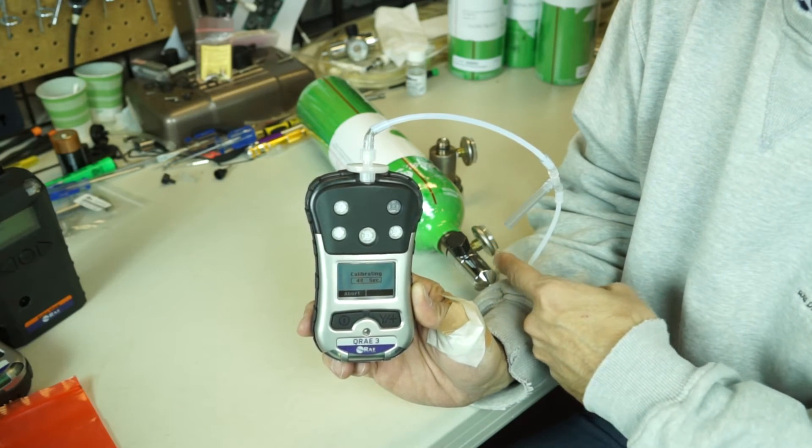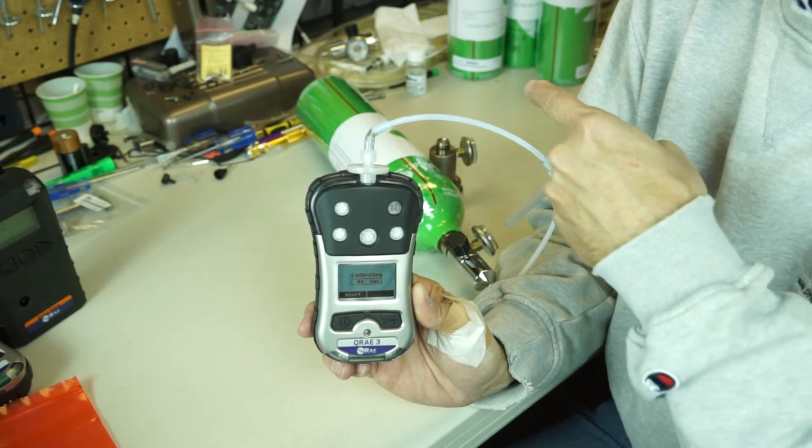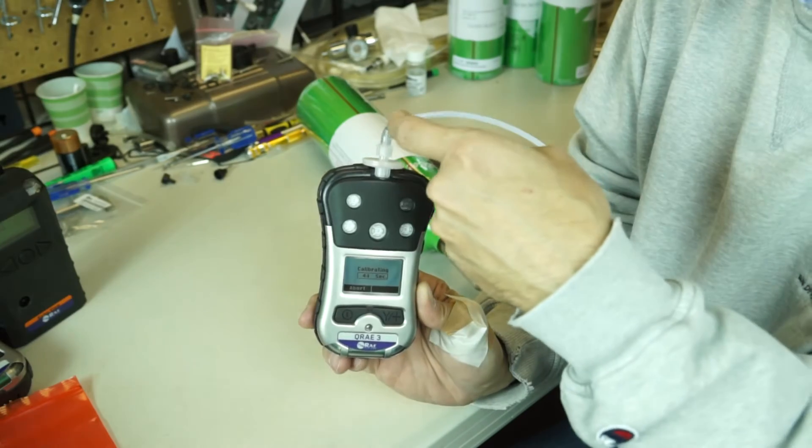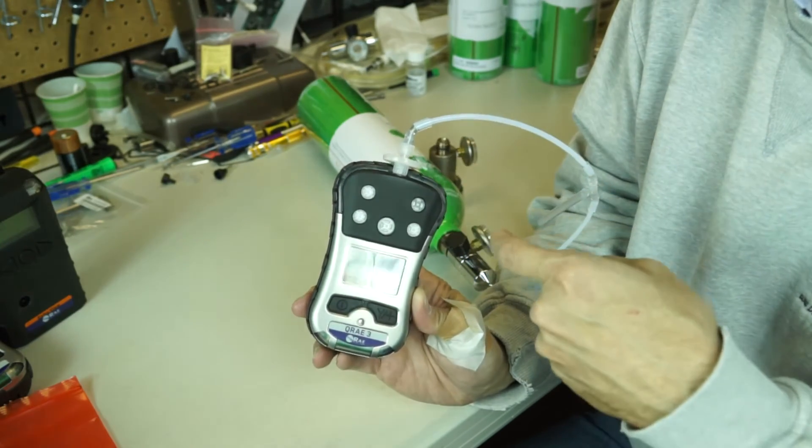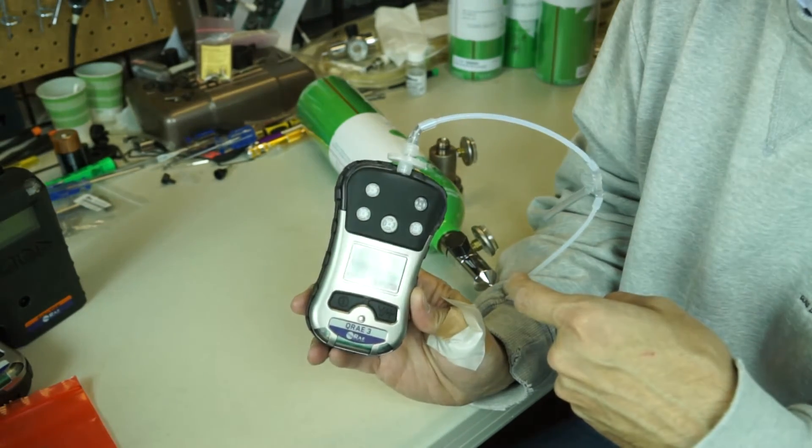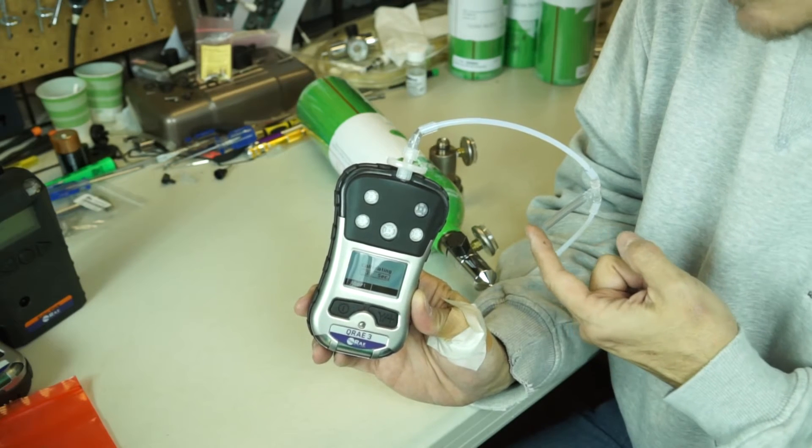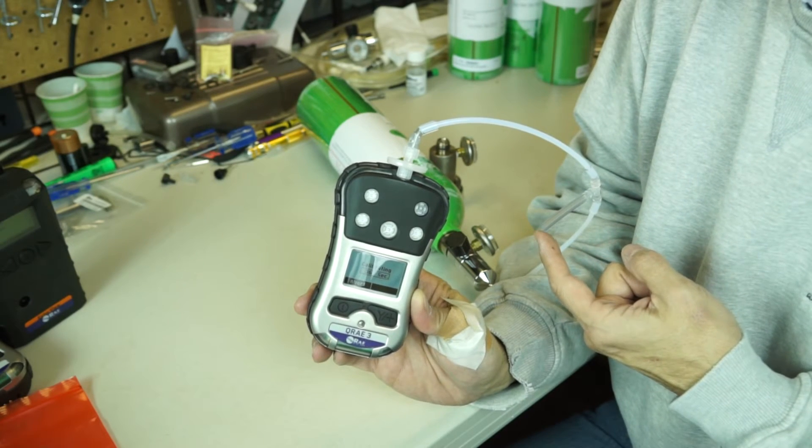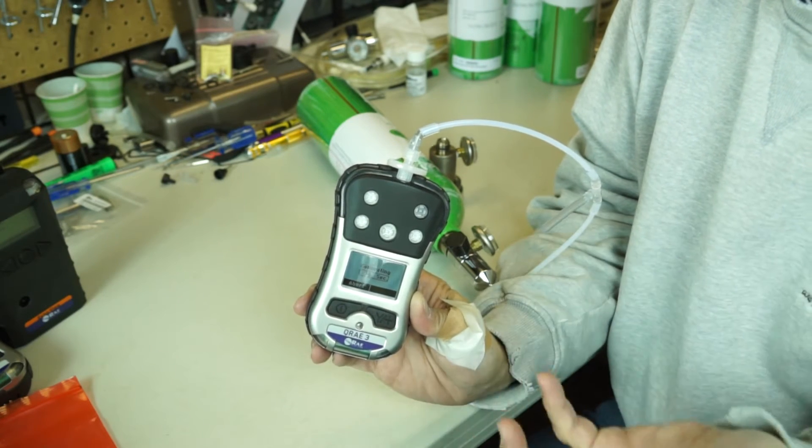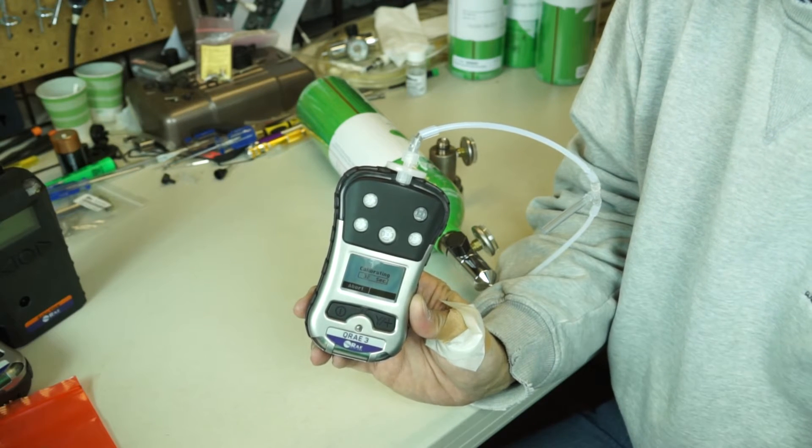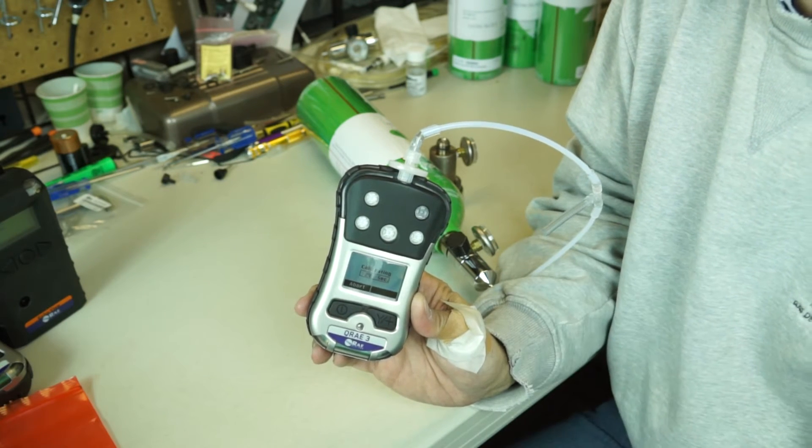So what's happening here, the gas is coming out. In this case a one liter per minute regulator. It's going right up into the instrument. And any excess is coming out the third leg. So what this means is the instrument is basically pulling at its own rate. The pump is pulling at its own rate. Any excess is coming out the third.